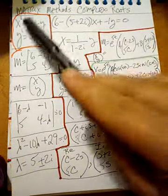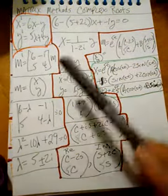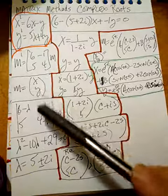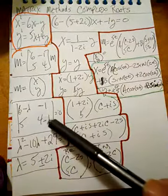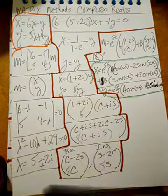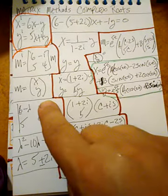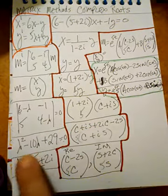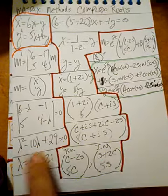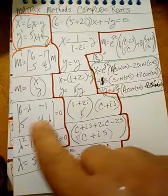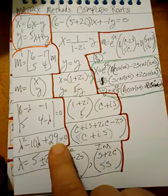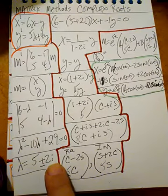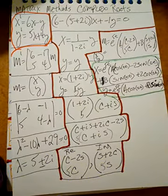This time we're going to have complex roots. Here's our example. We change it into a matrix where M equals x, y, put minus lambda on the diagonals, and take the determinant — this times this minus this times this. After doing all the algebra, you will get this expression, and when you solve for lambda you get five plus or minus two i.